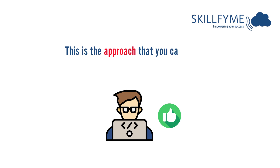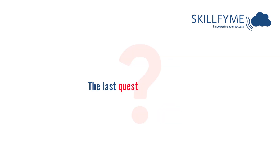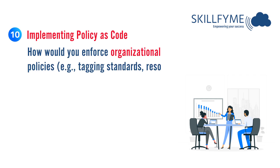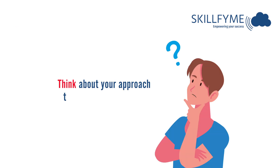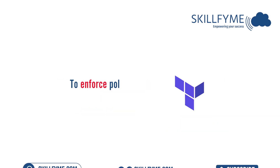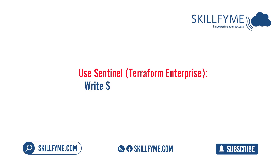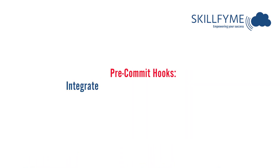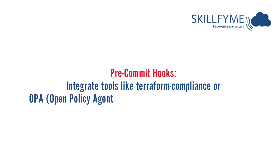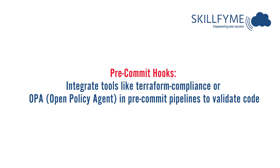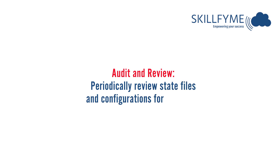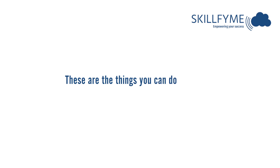The last question is about implementing policy as code: how would you enforce organizational policies like tagging standards or resource limits in Terraform? Use Sentinel in Terraform Enterprise to write policies enforcing mandatory tags or size limits. Integrate tools like Terraform Compliance or OPA (Open Policy Agent) in pre-commit pipelines to validate code. Create approved modules with built-in compliance by design, and periodically audit and review state files and configurations for policy violations.